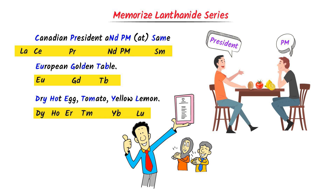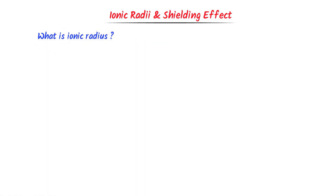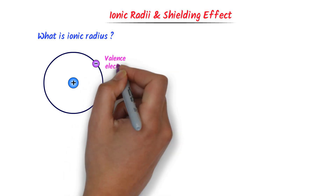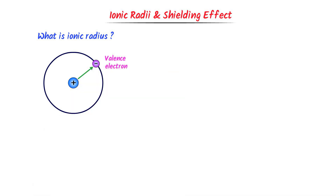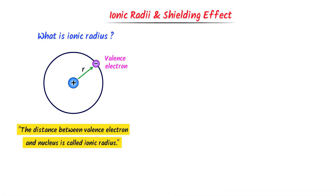Now to learn Lanthanide Contraction, we must learn the concept of Ionic Radii and Shielding Effect. What is Ionic Radius? Consider this atom — this is a valence electron. Let the distance between the nucleus and the valence electron be R. We define Ionic Radius as the distance between the valence electron and the nucleus.